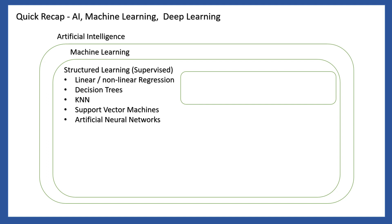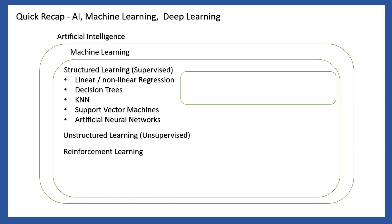Supervised learning also includes artificial neural networks. We have structured learning with labeled data, as well as unstructured learning. Unsupervised learning uses unlabeled data, for example in clustering. Reinforcement learning uses a structural model and is a growing area, used in dashboards and similar applications.